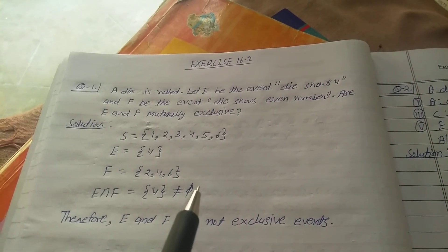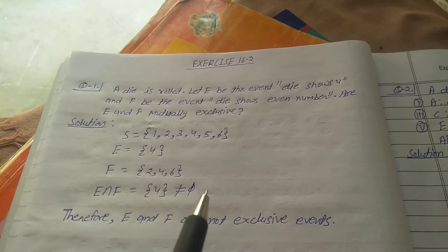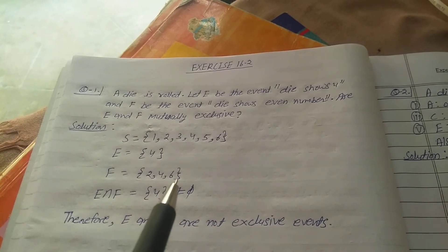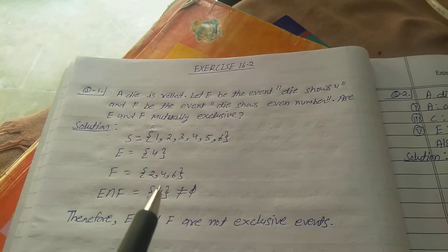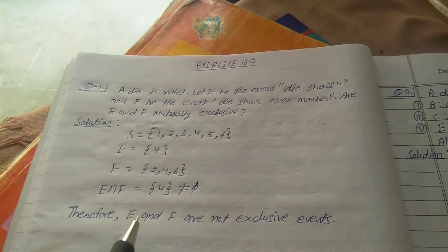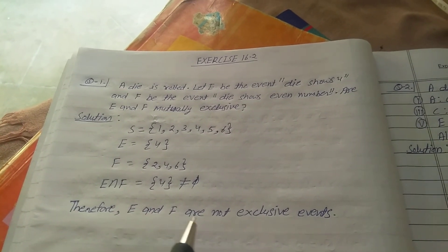This means mutually not exclusive. There is one common point, so not separate events. Therefore, E and F are not exclusive events.